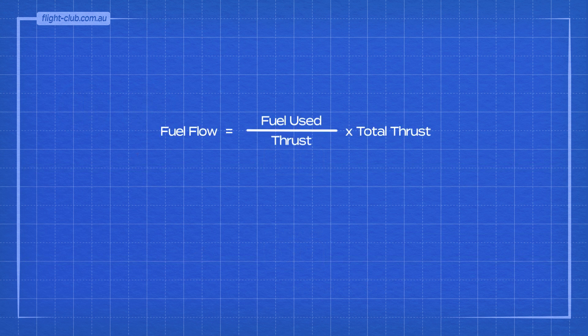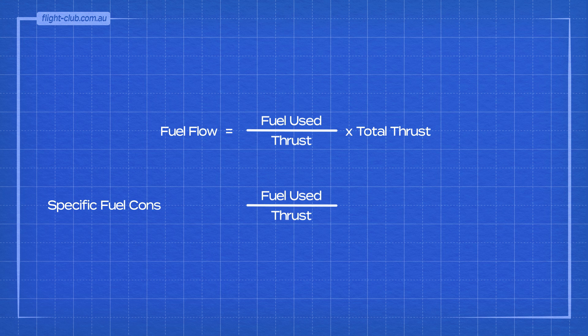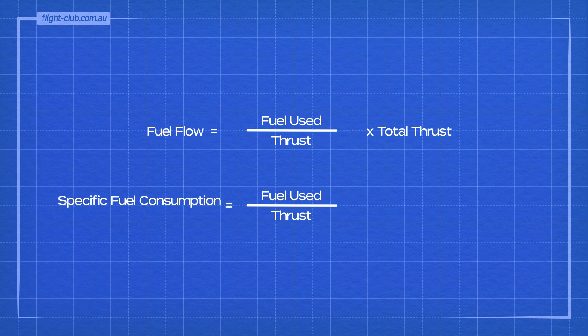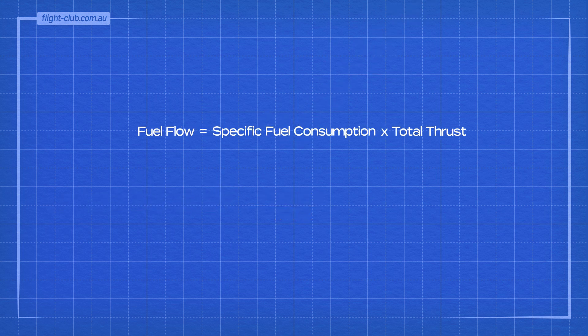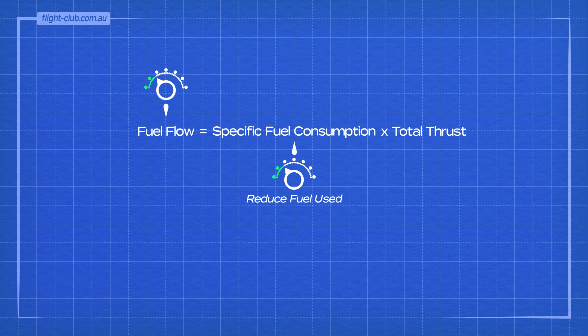Fuel flow is a function of fuel used per unit of thrust multiplied by the total number of thrust units. Fuel used per unit of thrust is commonly known as specific fuel consumption. For best endurance, the aim is to reduce fuel flow by reducing the amount of fuel used to produce each unit of thrust.